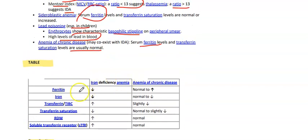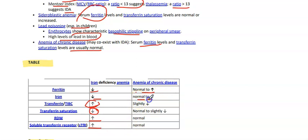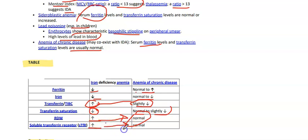Comparing IDA versus anemia of chronic disease: in IDA, ferritin is reduced; in anemia of chronic disease, it can be normal or elevated. Iron is decreased in IDA; transferrin or TIBC is elevated in IDA but slightly decreased in anemia of chronic disease. Transferrin saturation is decreased in both, but more so in IDA. RDW is increased in IDA but normal in anemia of chronic disease. Soluble transferrin receptor is elevated in IDA but normal in anemia of chronic disease.